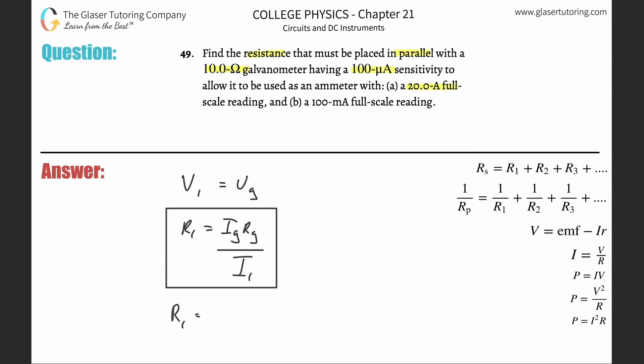Here all we have to do is solve. Ig they told us is flowing through the galvanometer, it has a 100 microamp sensitivity. Be careful, you need that in amps, so multiply that by 10 to the minus 6. The resistance inside that galvanometer is 10 ohms, and the current flowing through that particular resistance R1 is going to be 20 amps.